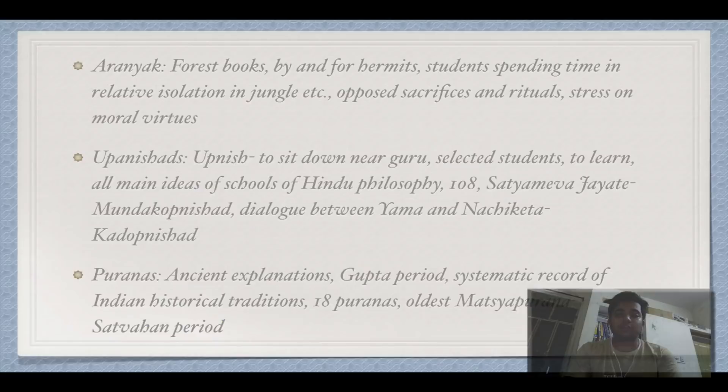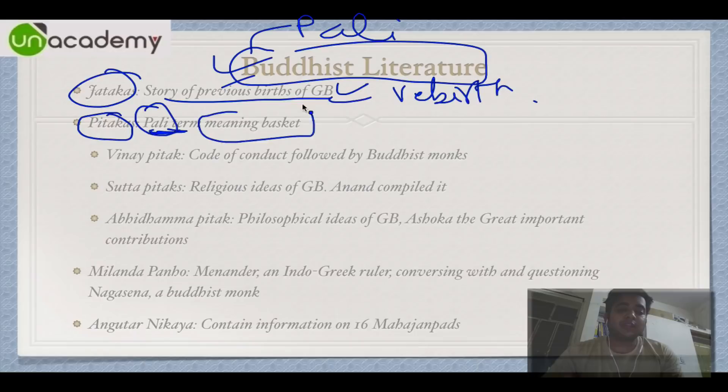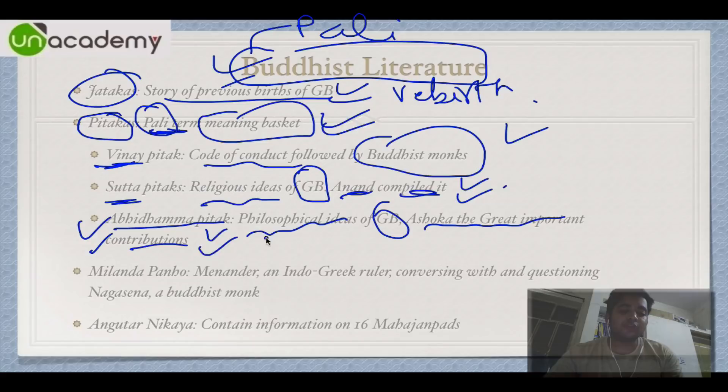In Buddhist literature, Jatakas are stories of the previous births and rebirths of Gautam Buddha. Pitakas is a Pali term — Buddhist texts are written entirely in Pali — and 'Pitak' literally means basket, so these are baskets of wisdom. There are three: Vinaya Pitaka, the code of conduct for Buddhist monks; Sutta Pitaka, the religious ideas of Gautam Buddha compiled by his disciple Ananda; and Abhidhamma Pitaka, the philosophical ideas of Gautam Buddha, to which Ashoka the Great made important contributions.